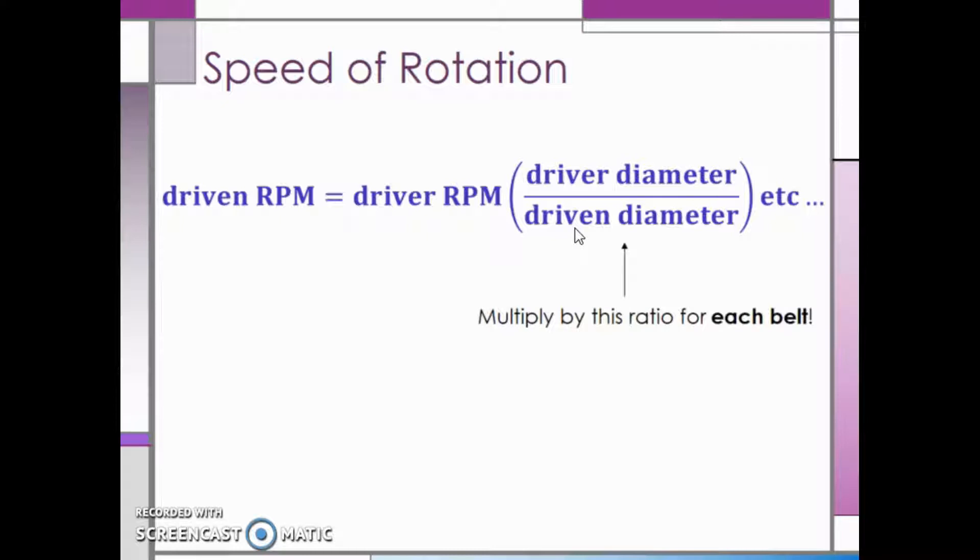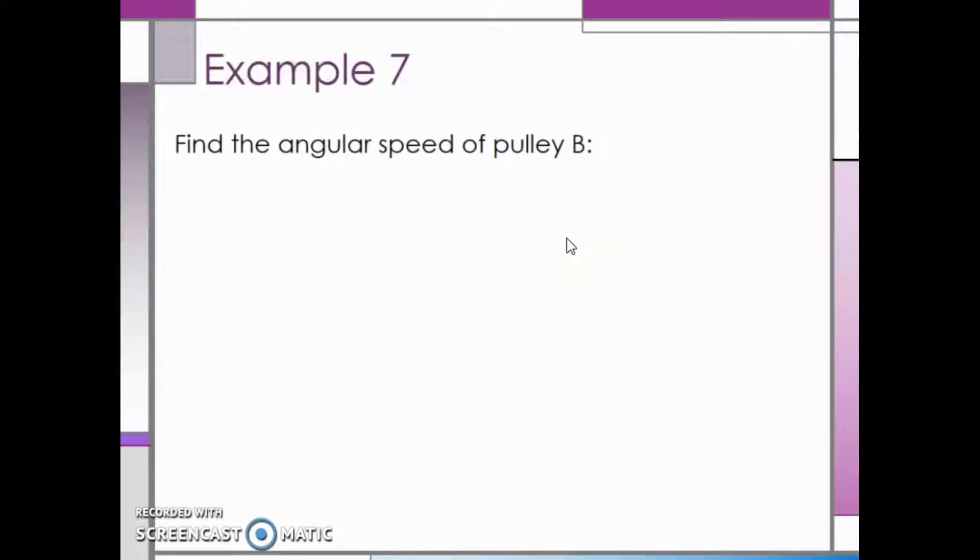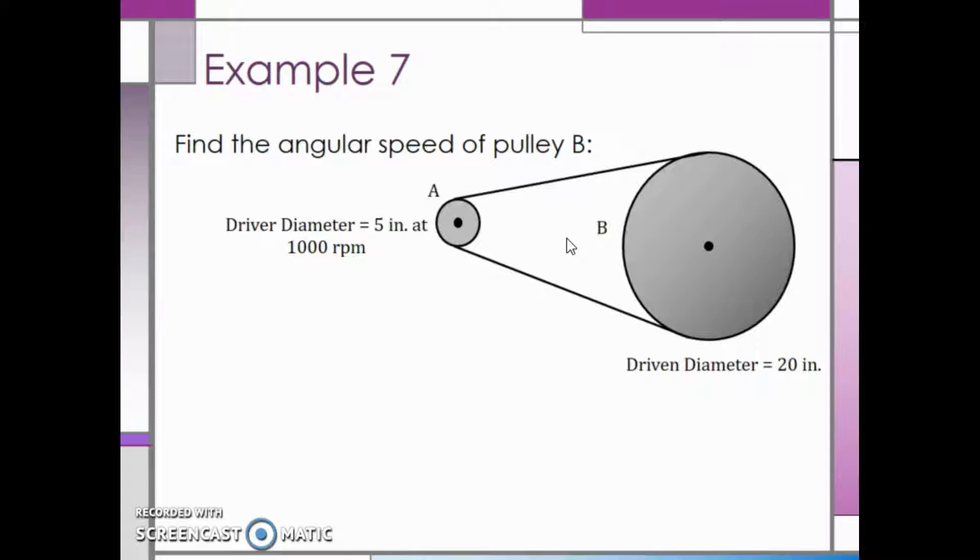We will multiply by this ratio of the driver diameter to the driven diameter for each belt. Let's take a look at an example. We want to find the angular speed of pulley B.